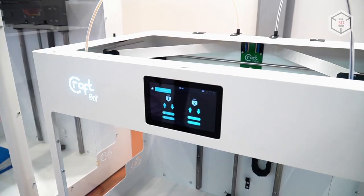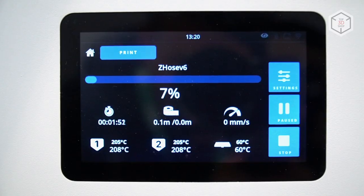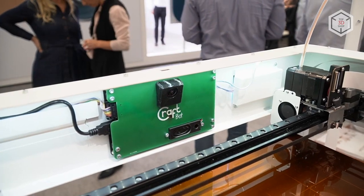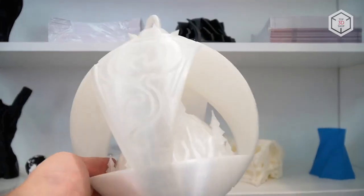The printers have automatic leveling sensors, filament run-out and blackout recovery sensors, and a webcam for remote monitoring. This significantly reduces the risk of defects.